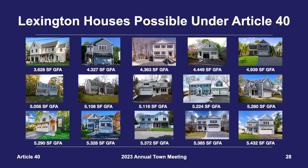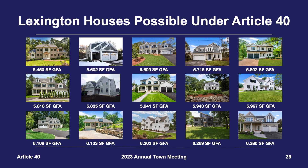What kind of houses could be constructed under the new limits? Here are 15 homes built in Lexington in the last few years ranging from around 3,600 to 5,400 square feet GFA, and all could be built again under Article 40 depending on the lot. Here are another 15 homes ranging from around 5,400 to 6,300 square feet GFA, and all could also be built again under Article 40. Simply put, the intent is that when redevelopment occurs it be smaller, and these 30 properties demonstrate that smaller homes are being built today and would likely continue to be built in the future.